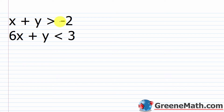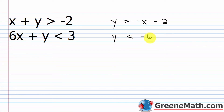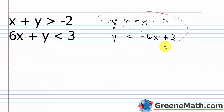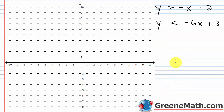The quickest way to do this is to solve each inequality for y. For the first one, subtract x from each side: y is greater than negative x minus 2. For the second, subtract 6x from each side: y is less than negative 6x plus 3. Once I have this, I can take it to the coordinate plane. The boundary line in each case would be a broken line, because we have a strict inequality — y is strictly greater than, y is strictly less than — so the boundary line is not part of your solution.